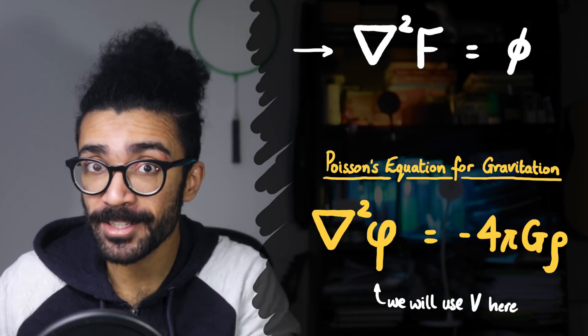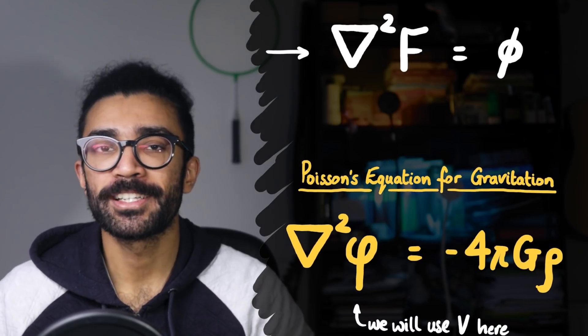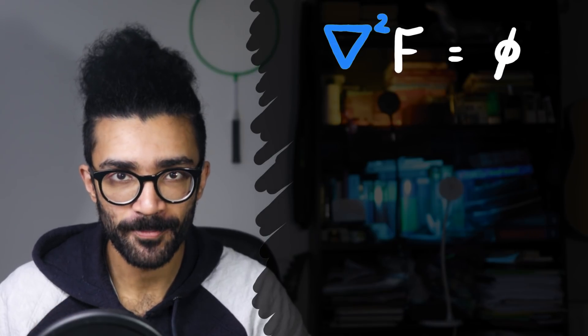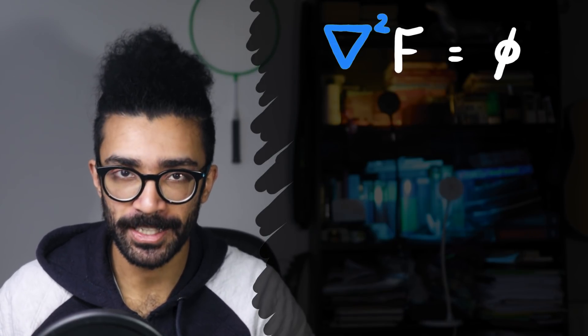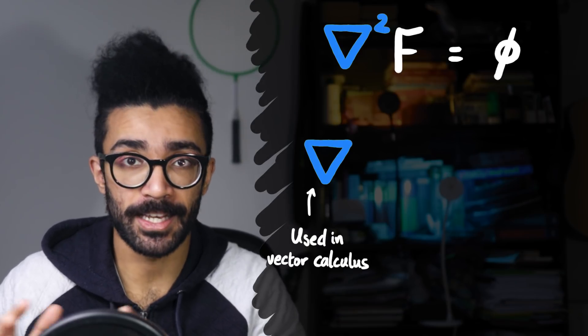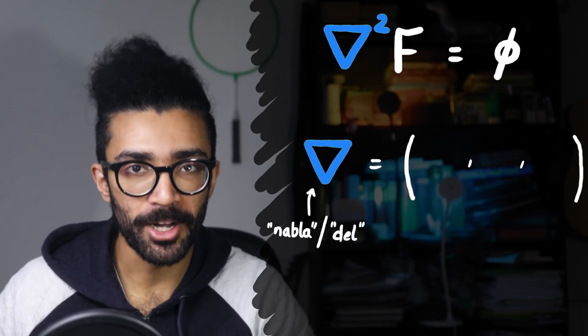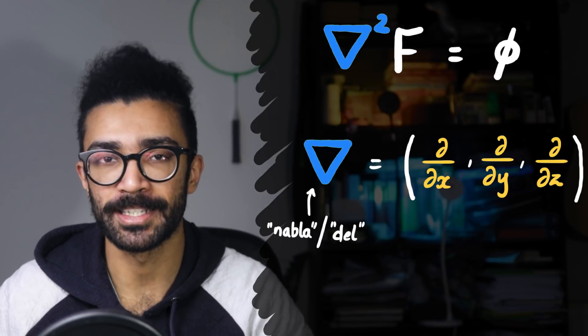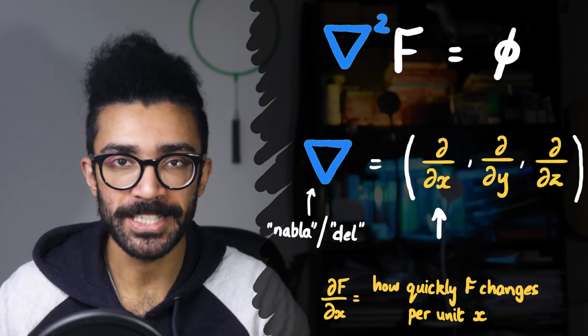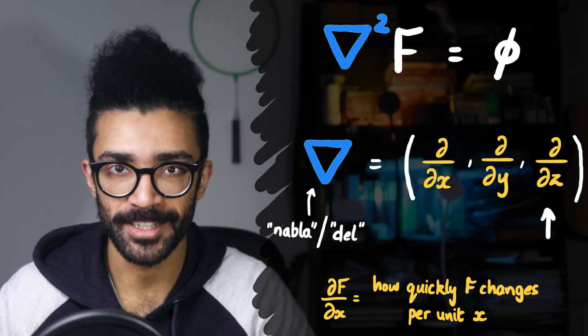We'll start by understanding the mathematical meaning of each one of these symbols and then applying some physical intuition to it. The first thing we see in our equation is this downward-pointing triangle squared. This symbol has a very particular meaning in vector calculus. The first thing we need to know is that the downward-pointing triangle is known as a nabla or a del. And we can think of it as a vector containing partial derivatives d by dx, d by dy, and d by dz. Each one of these measures how quickly a certain quantity changes over a small distance in the x-direction, the y-direction, and the z-direction.